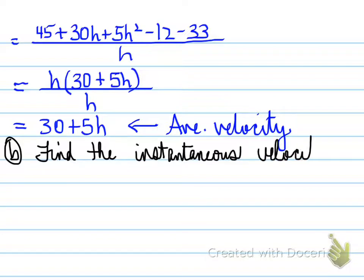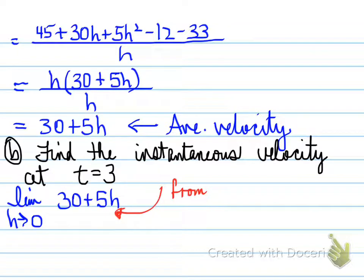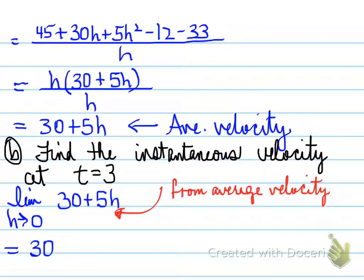Part b asks us to find the instantaneous velocity at t = 3. We take the limit as h approaches 0 of the average velocity expression 30 + 5h. As h → 0, the distance between 3 and the next point becomes infinitely small, giving us the instantaneous velocity. The limit evaluates to 30, so the instantaneous velocity at t = 3 is 30 meters per second.